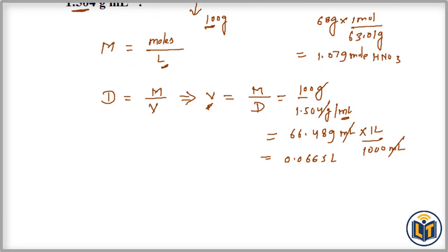Now we can plug in the values. We have the moles of solute and the volume of solution in liters. We can calculate the molarity of the solution. Molarity equals moles of solute, which is 1.079 moles, upon the volume of solution, 0.0665 liters.